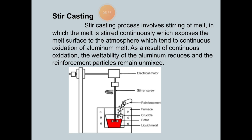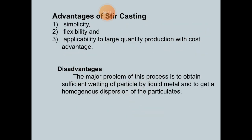After stir casting, the mix is allowed to solidify. The molten mixture can be poured into a mold or die to get the required output. The advantages of stir casting are simplicity, flexibility, and applicability for large-quantity production with cost advantage. The major disadvantage is obtaining sufficient wetting of particles by liquid metal and achieving a homogeneous dispersion of the particulate.